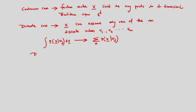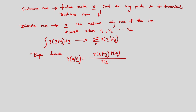Corresponding to this, our Bayes formula gives the posterior probability: P(omega_j | x) equals P(x | omega_j) times P(omega_j) divided by the evidence. P(x | omega_j) is the likelihood or class conditional density, P(omega_j) is the prior probability, and the evidence for C classes is the sum over j of P(x | omega_j) times P(omega_j).